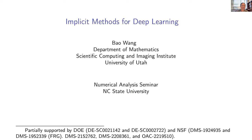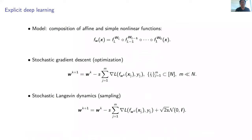Thank you very much. It's a great pleasure to speak here and meet a lot of friends. Today I'm going to talk about implicit methods for deep learning. First, I'll talk about a classical deep learning paradigm. Deep learning contains the model-based architecture and the optimization algorithm. Sometimes you want to do uncertainty quantification, do some basic inference — we also need sampling. The classical architecture is defined as the composition of simple affine and nonlinear transformations.